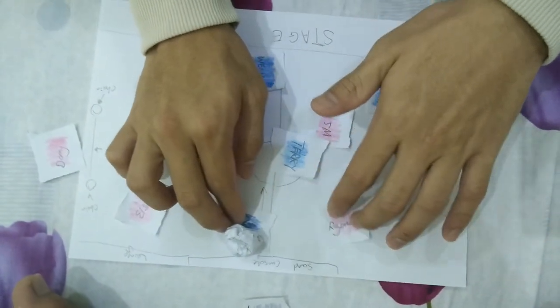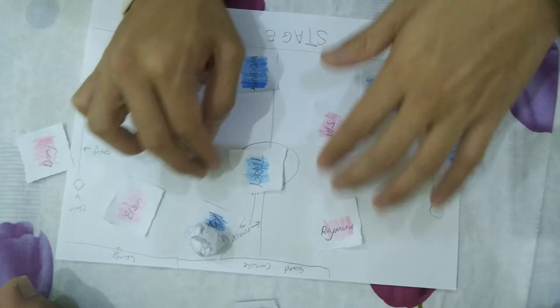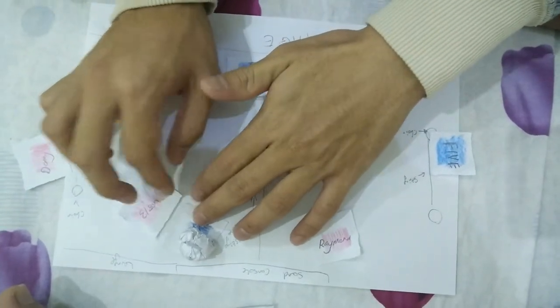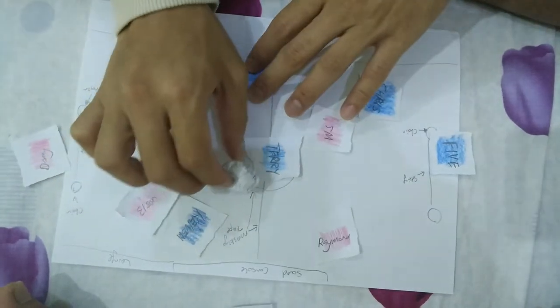Cut through Raymond and then by the time, you know, when he's here, Elson will come and block. He cannot pass by. Then he will pass the ball straight away to Terry.